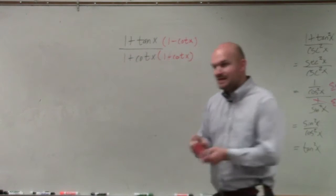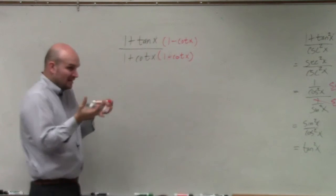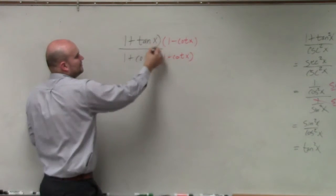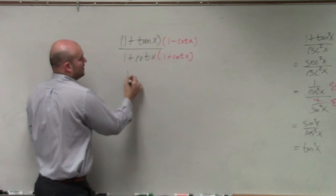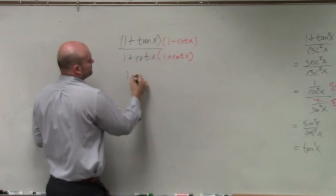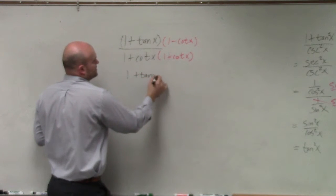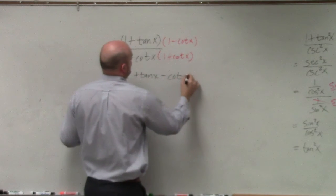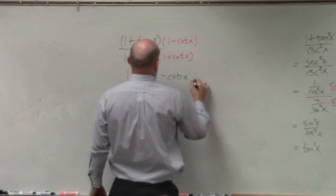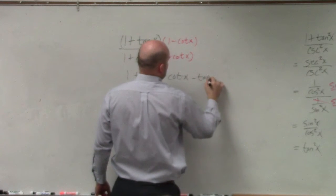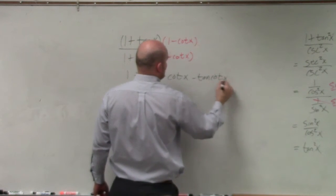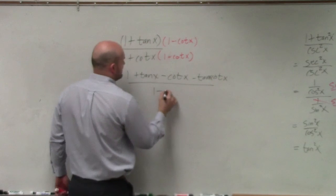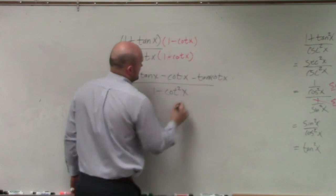But the reason why I like doing that is because usually, on a lot of problems, you guys can multiply that out. So that's 1 times 1 plus tangent of x minus cotangent of x minus tangent cotangent of x, all over 1 minus cotangent squared of x.